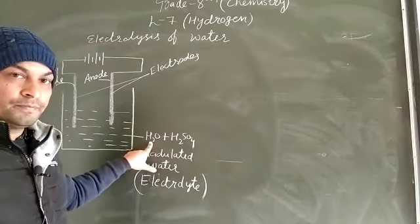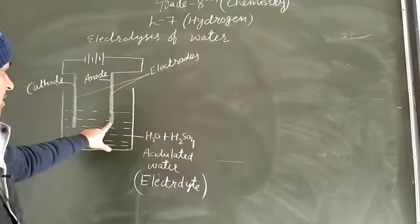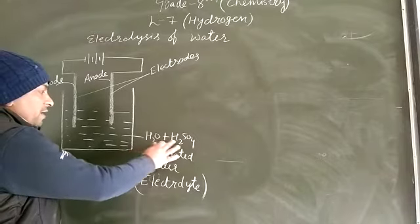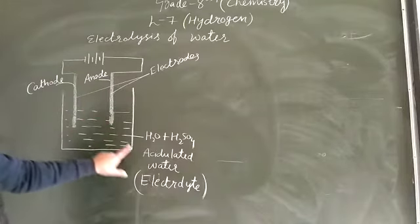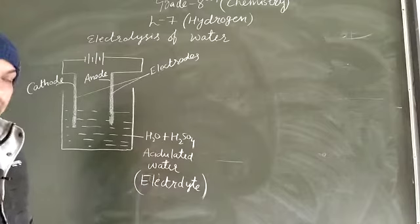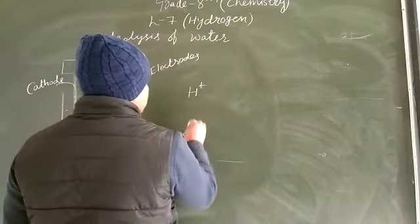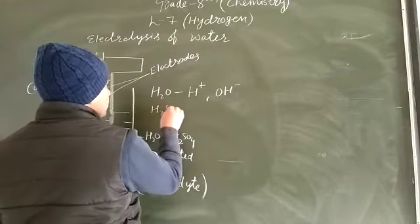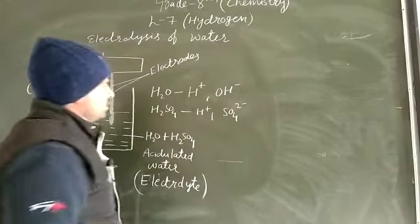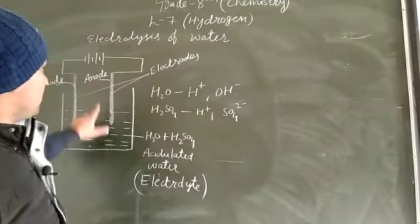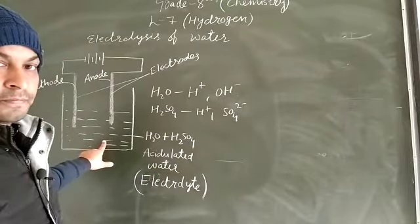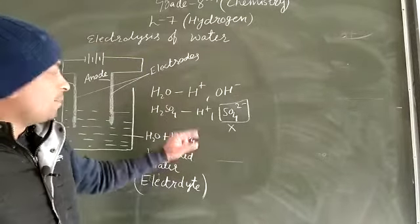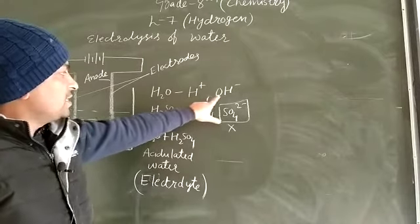Now here I have taken water. Whenever electricity passes through these electrodes into the water, the water gets ionized. There are two compounds — water and sulphuric acid. When electricity goes into this acidulated water or electrolyte, it decomposes into ions. Water forms H⁺ and OH⁻ ions, and H₂SO₄ forms H⁺ and SO₄²⁻ ions. So four types of ions are formed, but only two participate in this reaction: H⁺ and OH⁻.